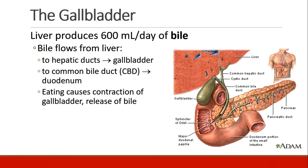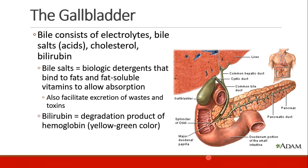The liver produces 600 milliliters per day of bile. Bile flows from the liver to the hepatic ducts and then to the gallbladder, to the common bile duct, and then into the duodenum. When we eat, the gallbladder contracts and releases bile also into the duodenum. Bile consists of electrolytes, bile salts which are acids, cholesterol, and bilirubin. Bile salts are detergents that bind to fats and fat-soluble vitamins and allow them to be better absorbed. Bile also facilitates excretion of wastes and toxins.